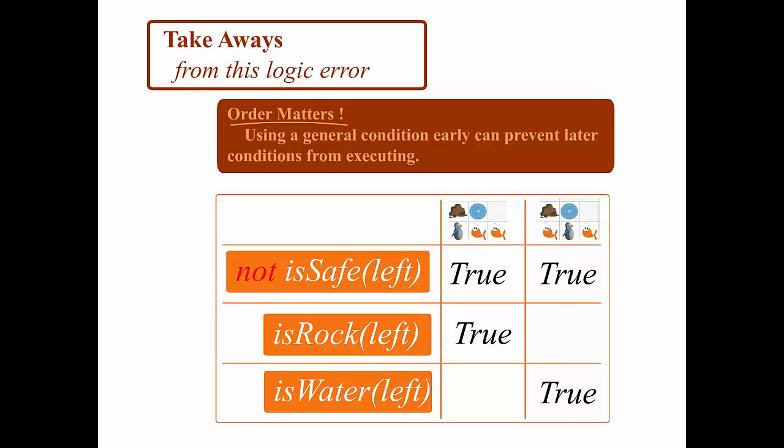Essentially, the first two times we test the loop, we get to not isSafeLeft first, and each time it's true, so we never end up getting to isRockLeft or isWaterLeft. The first statement is true in both cases, and thus the only one executed from the unit.